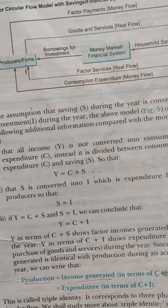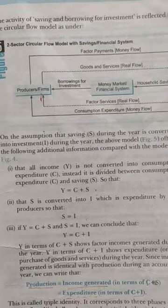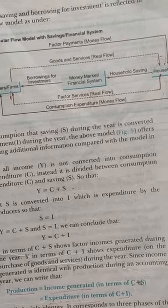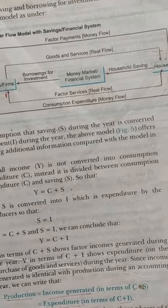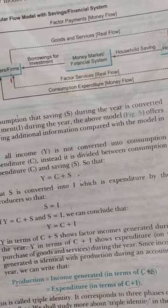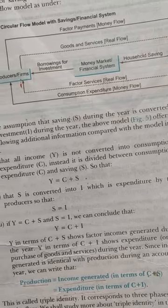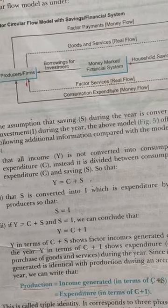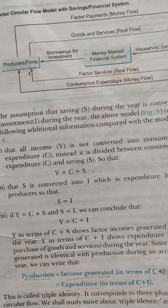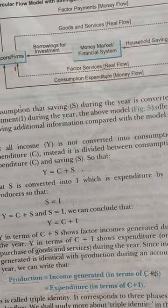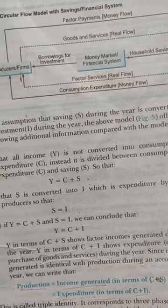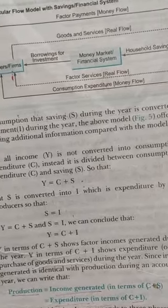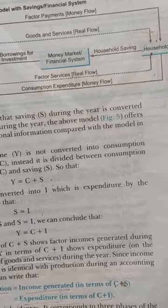For circular flow without saving, note down points one to ten. Point one: total production of goods equals total consumption — whatever producers produce, households consume entirely. Point two: factor payments by firms equal factor incomes of the household. So income equals consumption — that is, without saving, income equals consumption (Y = C).